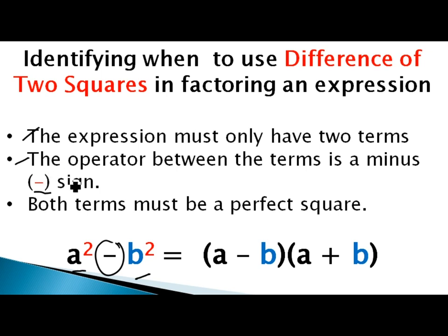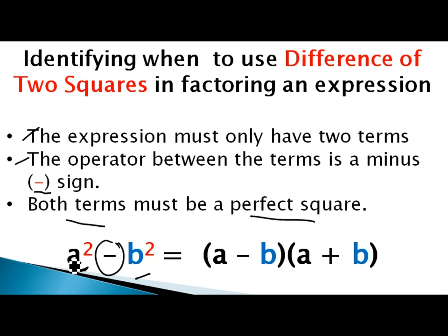The third and trickiest guideline is that both terms must be perfect squares. For example, a² and b² are perfect squares because a times a gives a², and b times b gives b². Once all three conditions are met, you can factor directly: a² minus b² is equal to the quantity (a minus b) multiplied by the quantity (a plus b).